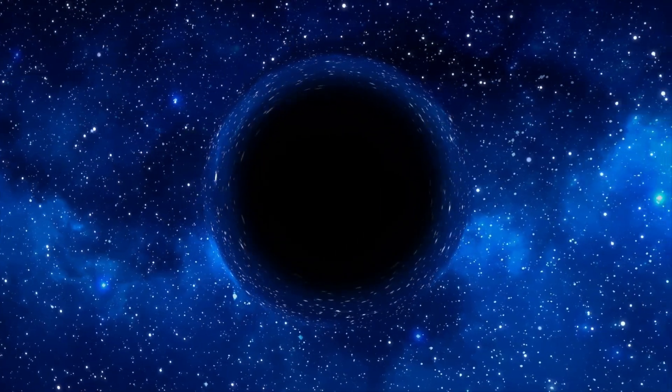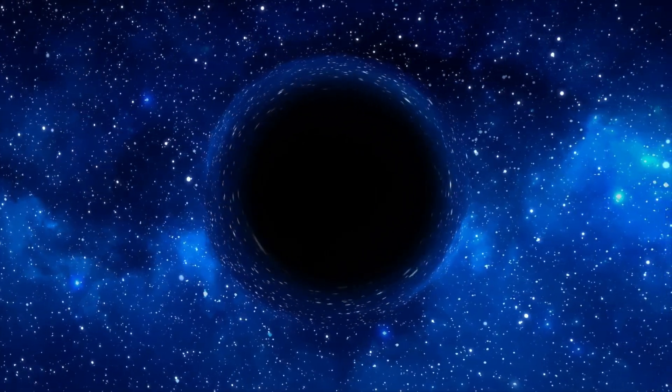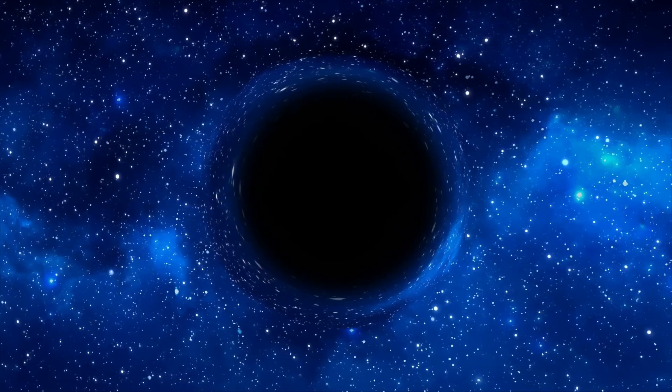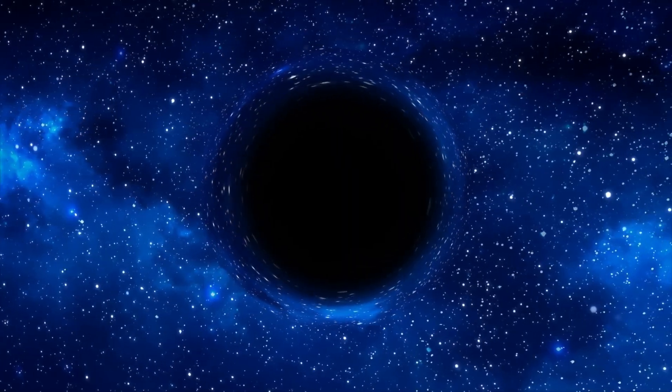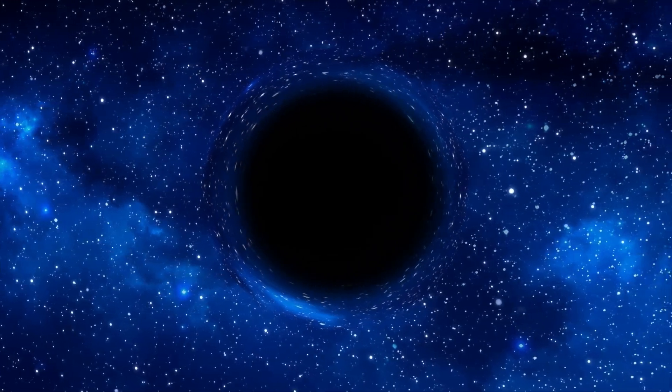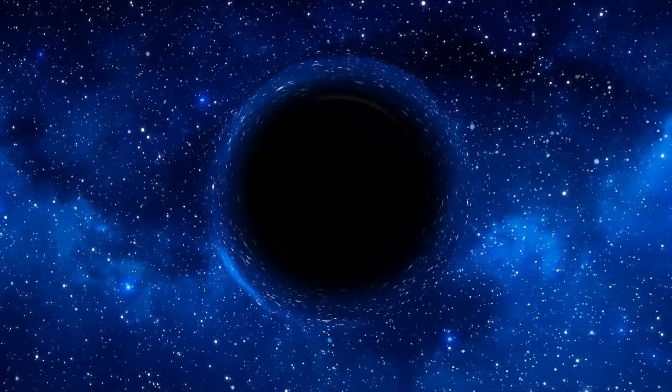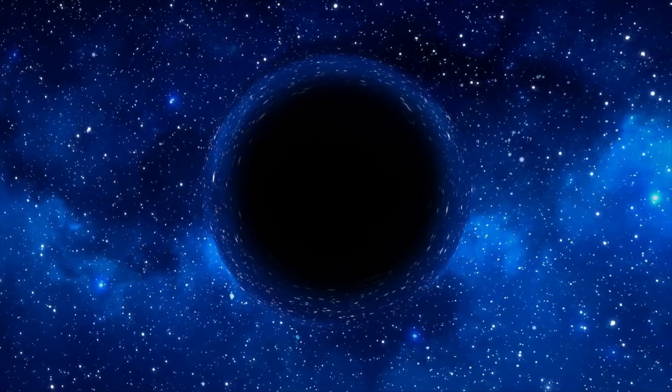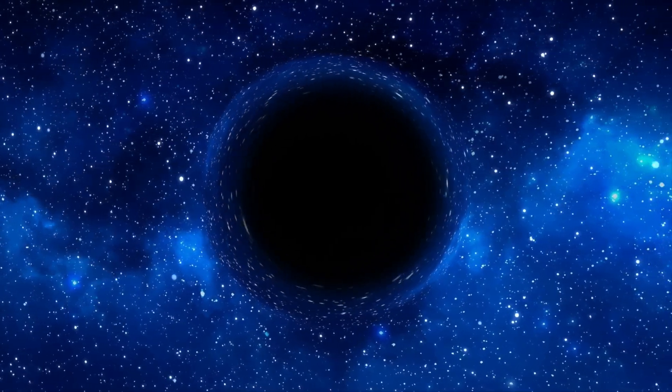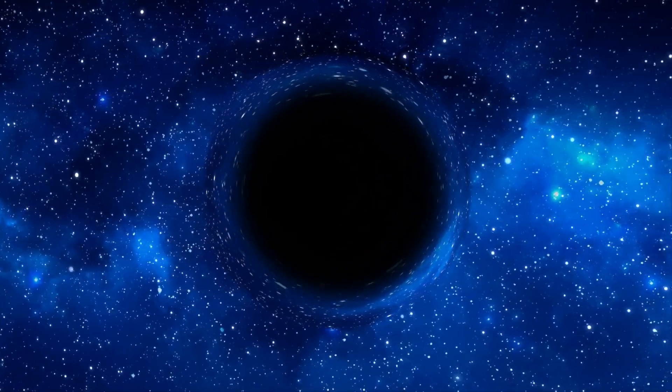In our universe, there's something else that becomes indistinguishable when it has the exact same values: subatomic particles. Put differently, the most massive objects in the universe share a bizarre property with the tiniest entities in the universe. What might that mean? We'll keep talking about it in later videos. If you don't want to miss it, make sure to subscribe to the channel and enable notifications. See you in the next video. Take care.